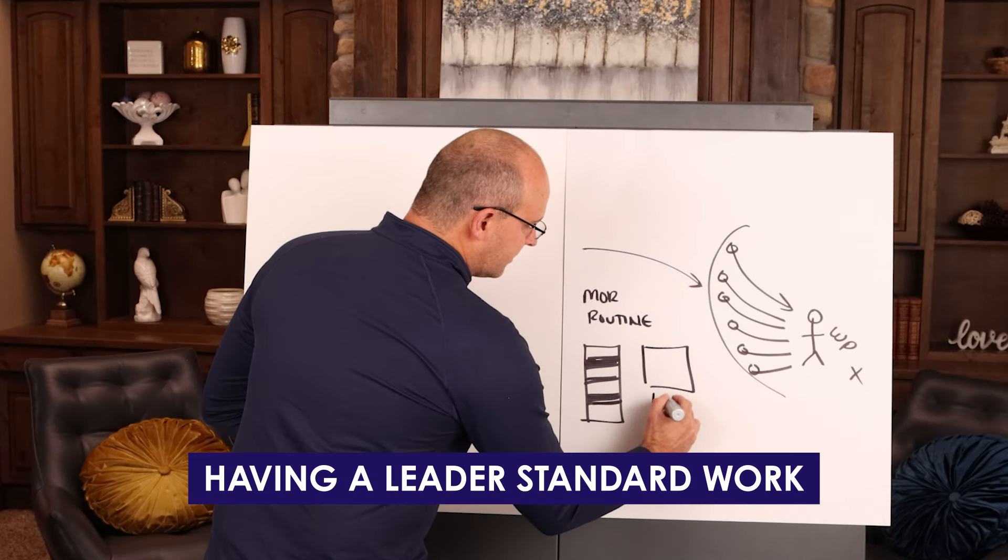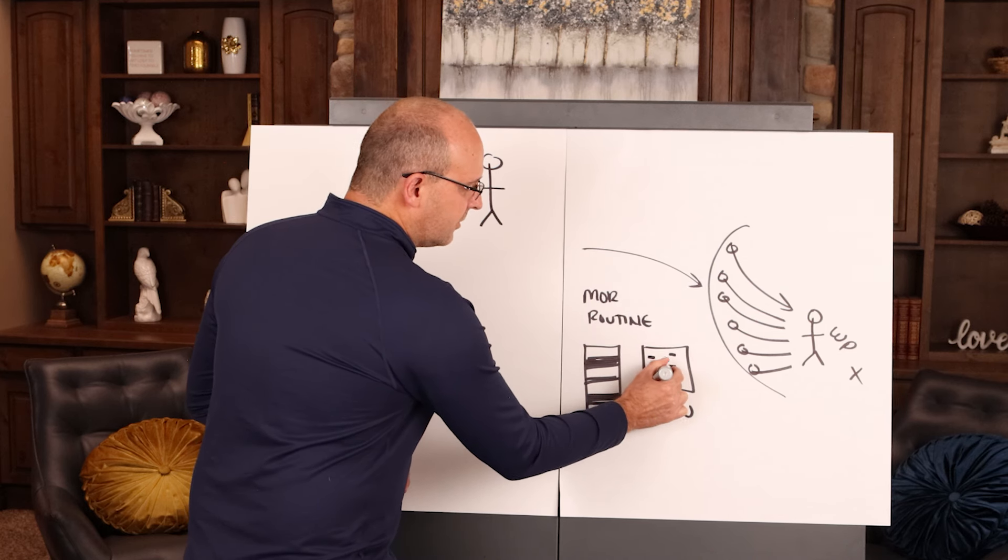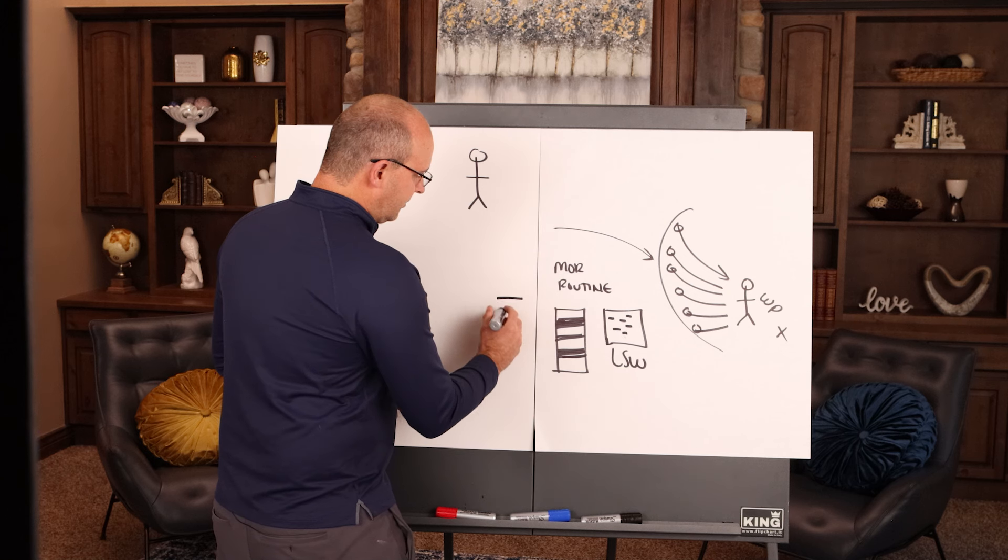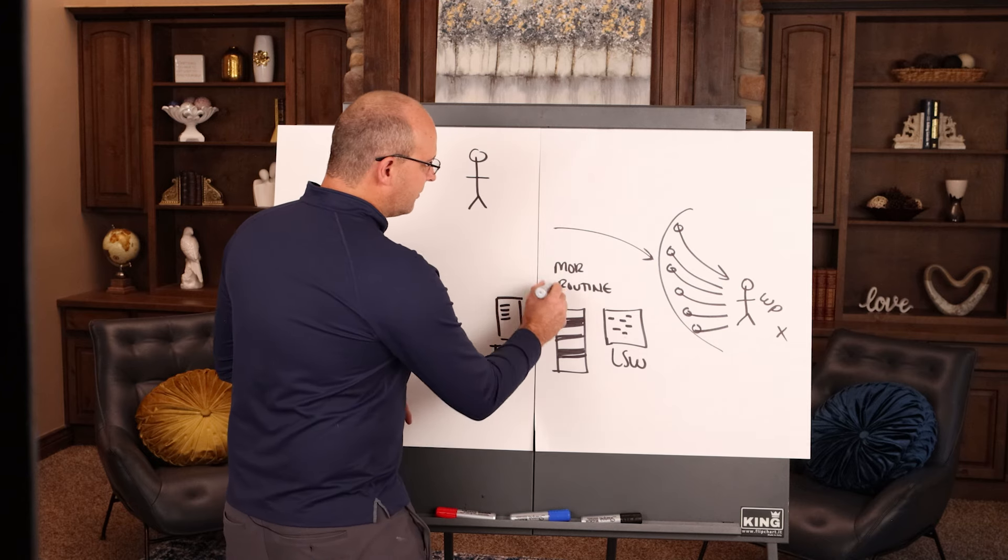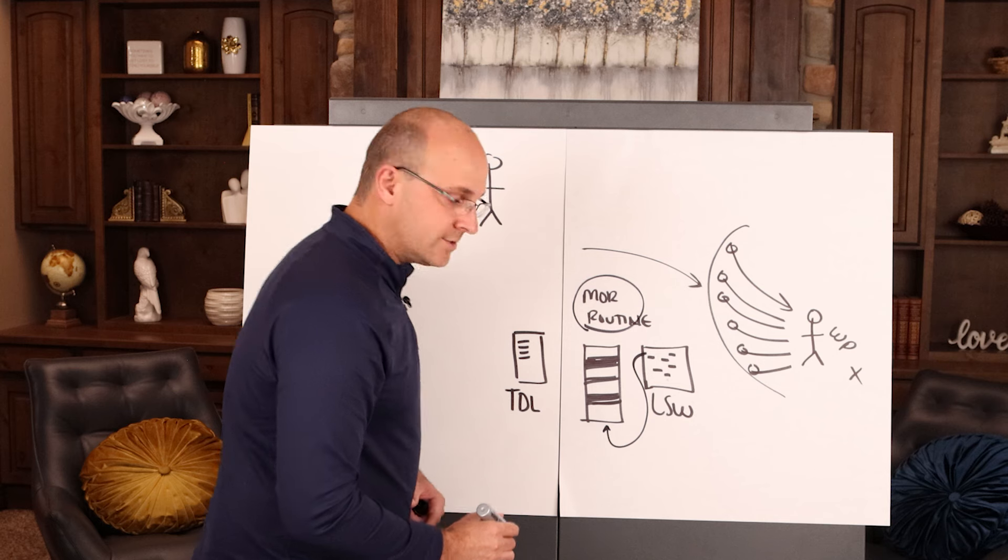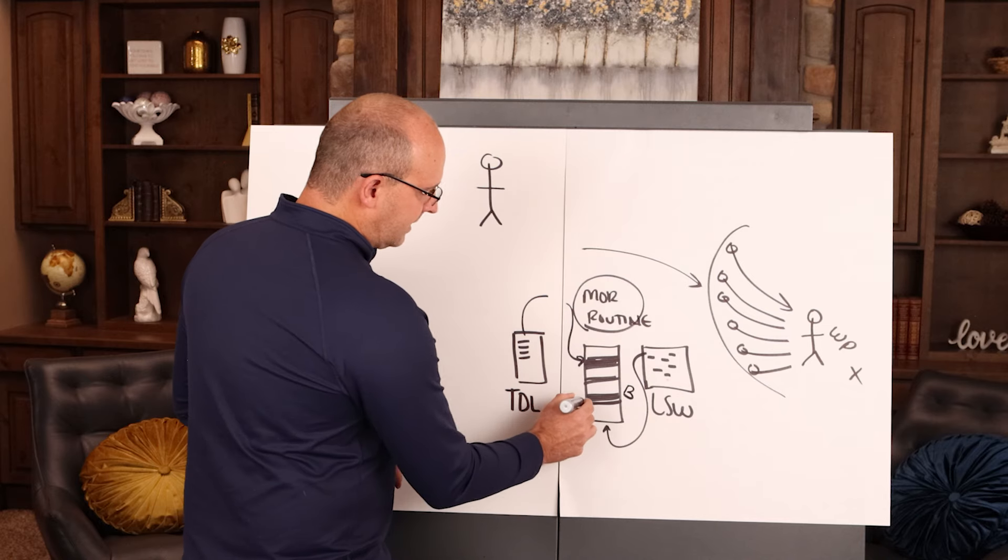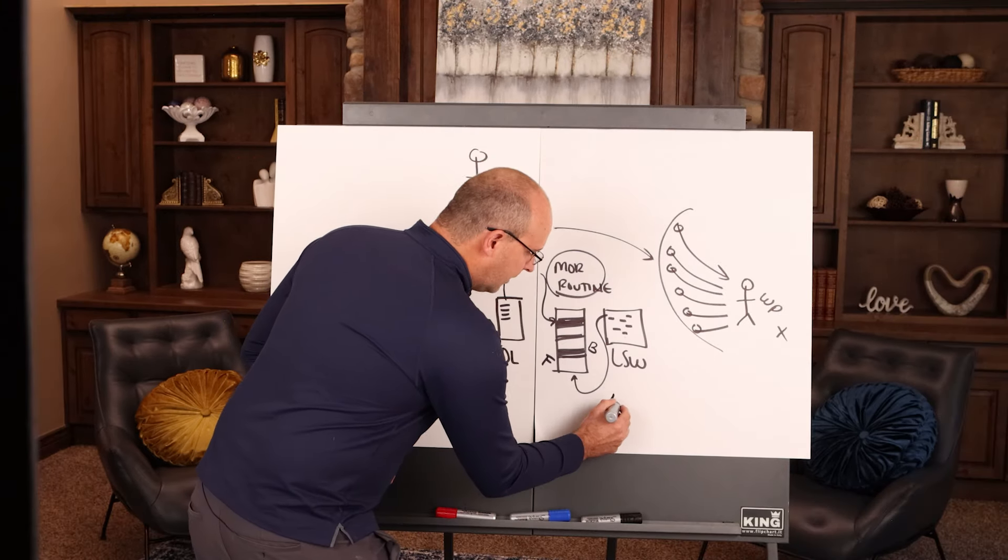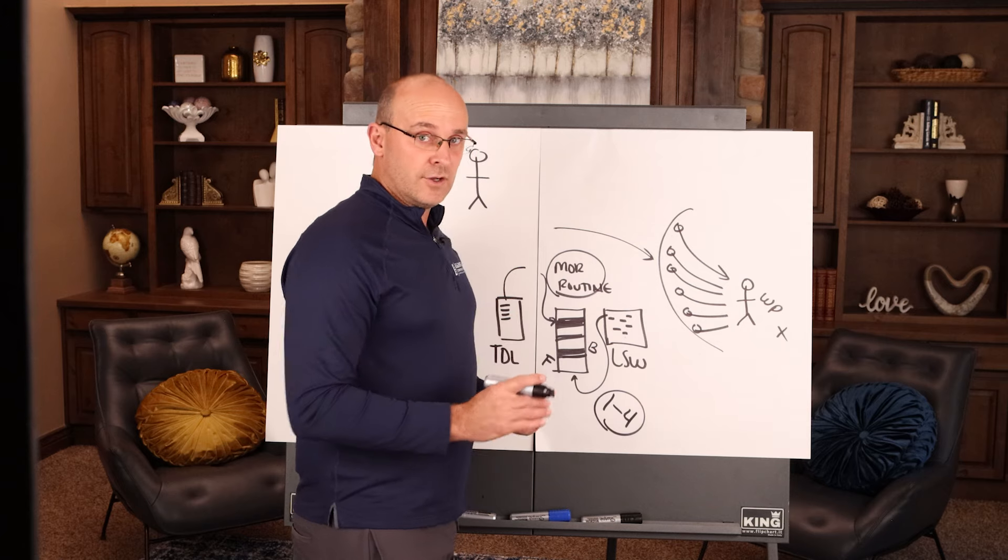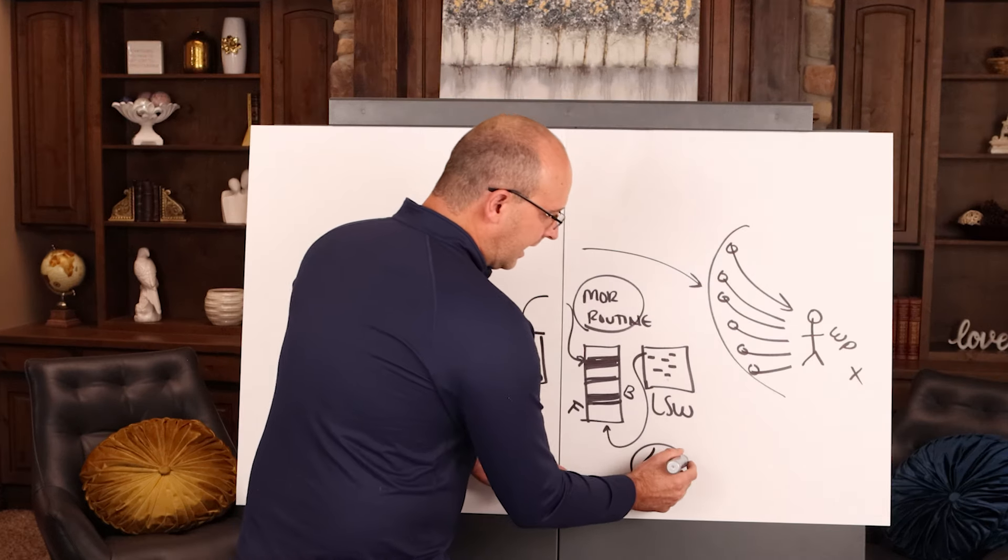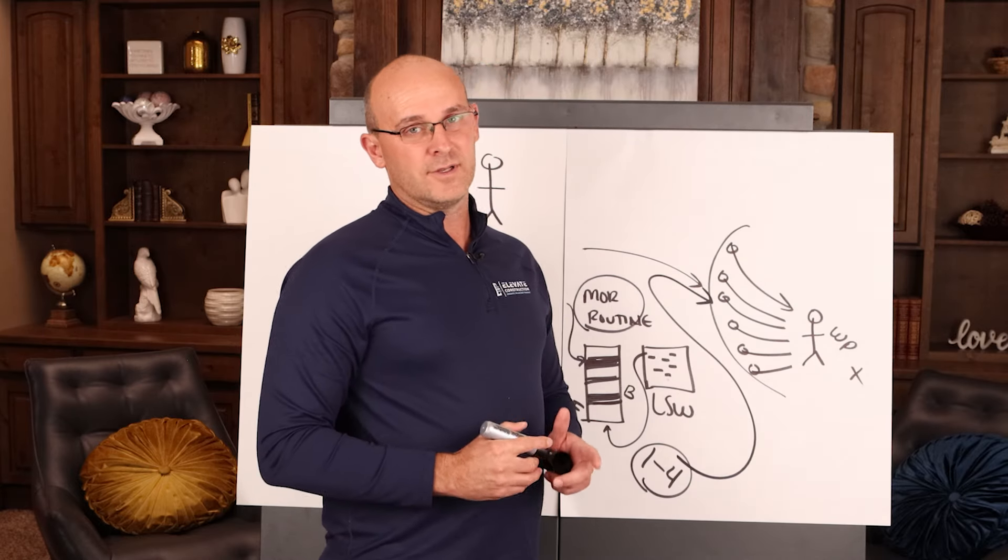You have what's called leader standard work. We'll link you to a video in the description below for this. This means the typical things you do for yourself, your family, and in your role, and you'll also have what's called a to-do list. These are the things that come up. What you'll do every day after your morning routine, you will plan your day with leader standard work and your to-do list, and you'll make sure that you have buffers in between and that you're focusing when you're doing tasks. This will save you one to four hours a day by making sure it's properly planned. Now, what do we do with that time? If you're not going home and using the time to do something else, you have this time to better support our people in the field and to have the capacity to get the foreman and the crews what they need.